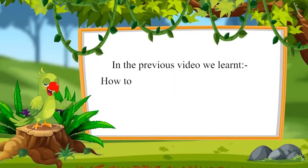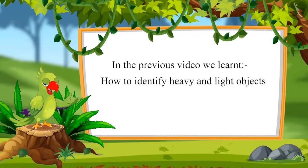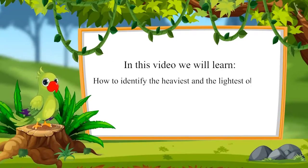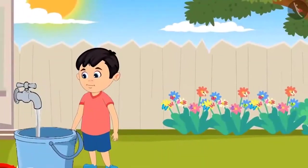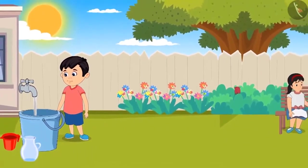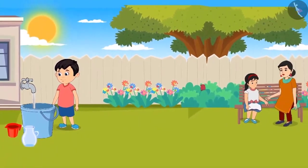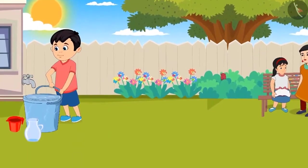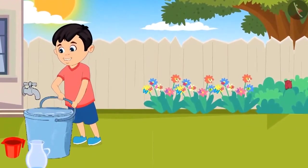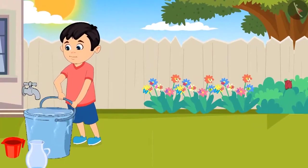How to identify heavy and light objects. In this video, we will learn how to identify the heaviest and lightest objects. Today, Chotu has to water the plants. Chotu is filling water in the bucket to water the plants. After filling the bucket, Chotu wanted to lift it but was not able to.